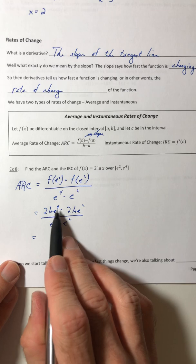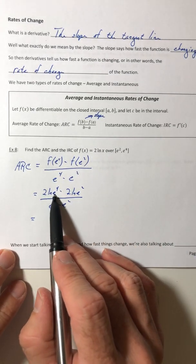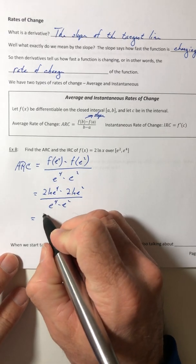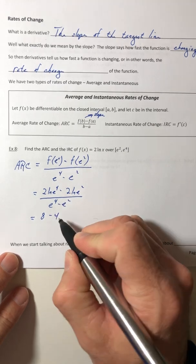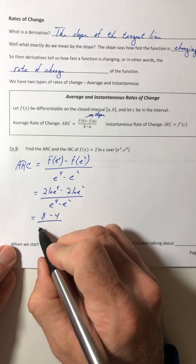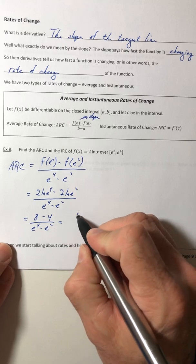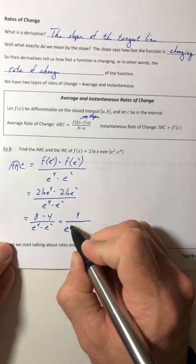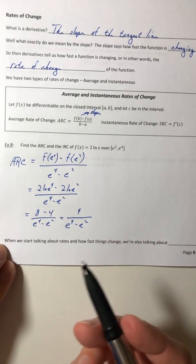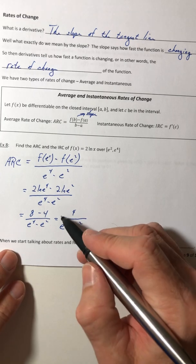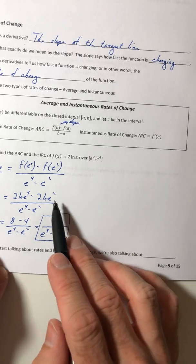So LNs and e, we like them together because most of the time they're going to cancel out. So ln(e⁴) is just 4, 4 times 2 is 8. ln(e²) is 2, 2 times the negative 2 is negative 4. And then still over e⁴ - e². So just subtract, 12 over e⁴ - e² is still in the denominator. You could factor out an e² if you wanted to, but it's not going to simplify any more than that, so you can go ahead and leave it alone.